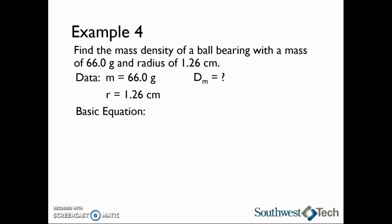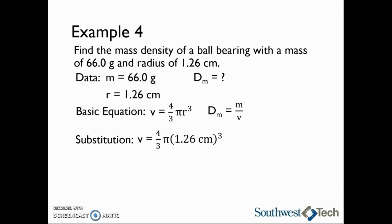In this problem I'm going to convert at the end. Since we are only given the radius of the ball bearing, we will need to find its volume. The volume of a sphere is four-thirds times pi times the radius cubed. The other basic equation we need is that mass density d sub m equals the mass divided by the volume. We won't need to rearrange either of these equations. Volume equals four-thirds times pi times 1.26 centimeters cubed, which gives us a total volume of 8.38 cubic centimeters.